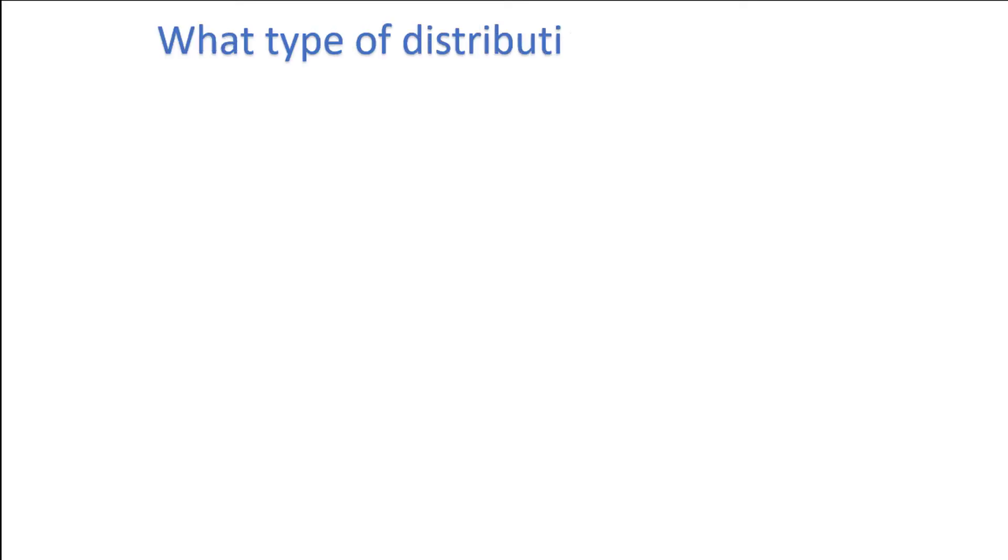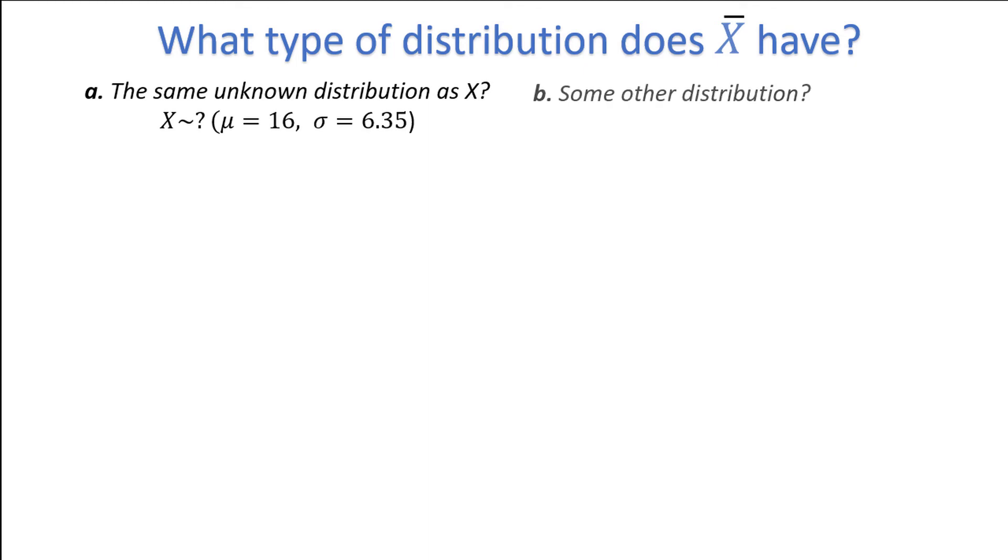What type of distribution does the sample mean X-bar have? Your choices are a, the same distribution as the individual observation X, which have some unknown distribution with a mean of 16 and a standard deviation of 6.35, or b, X-bar has some other distribution.